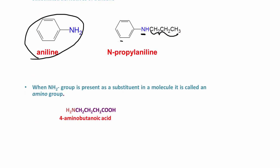When the amino group — that NH₂ group — is present as a substituent in a molecule, we call it an amino group. So in this case, we have an acid and we also have an amino group. We name it as an acid, so this would be butanoic acid — four carbons. The acid has priority over the amino group, so carbon one is the acid carbon. On carbon number four we have an amino group, so this would be 4-aminobutanoic acid.